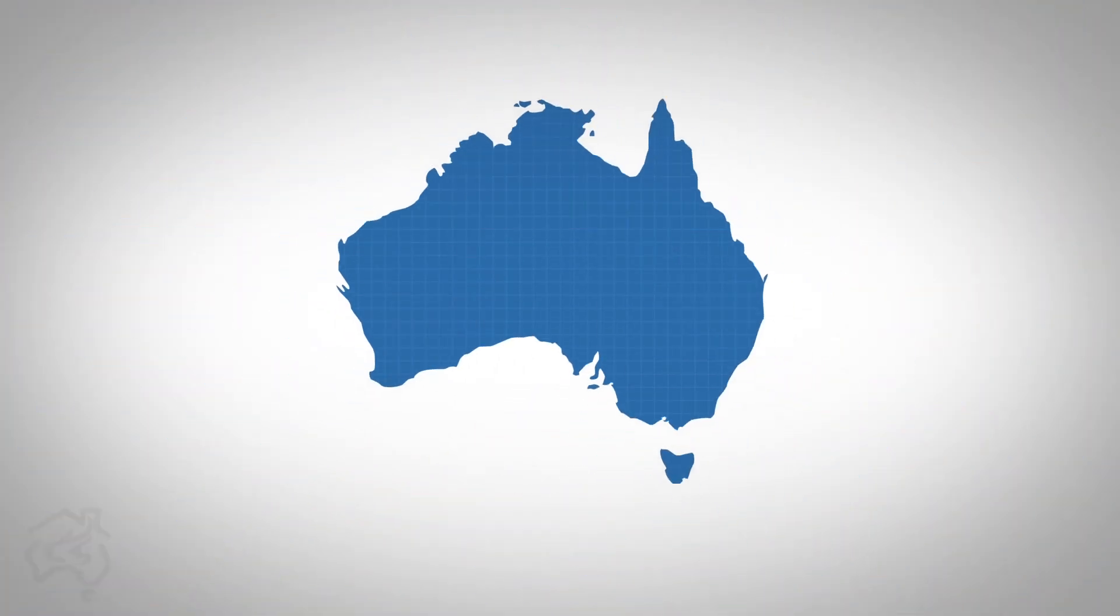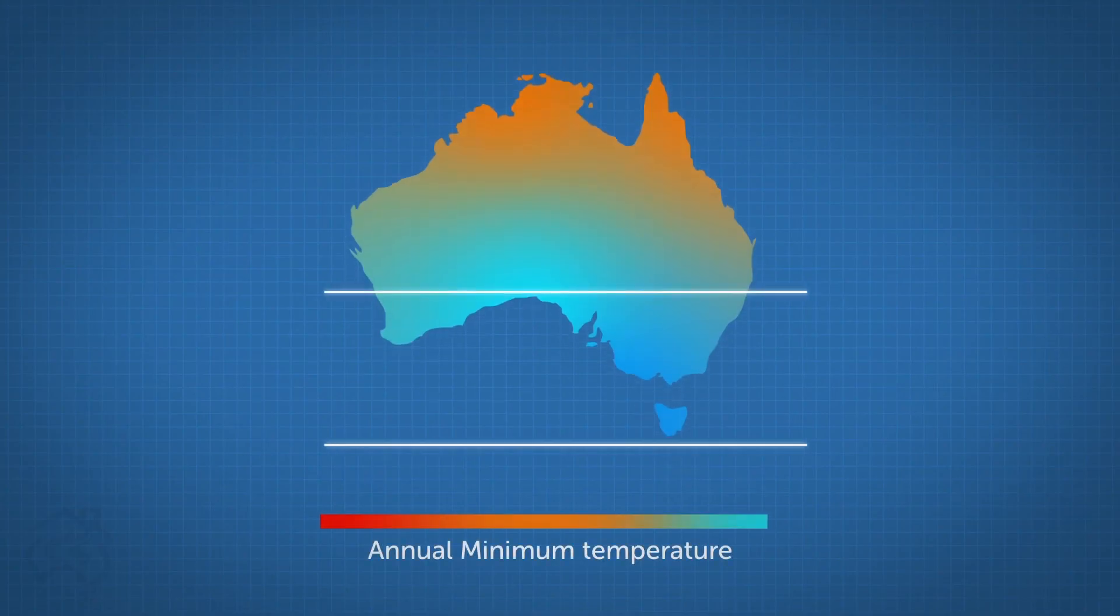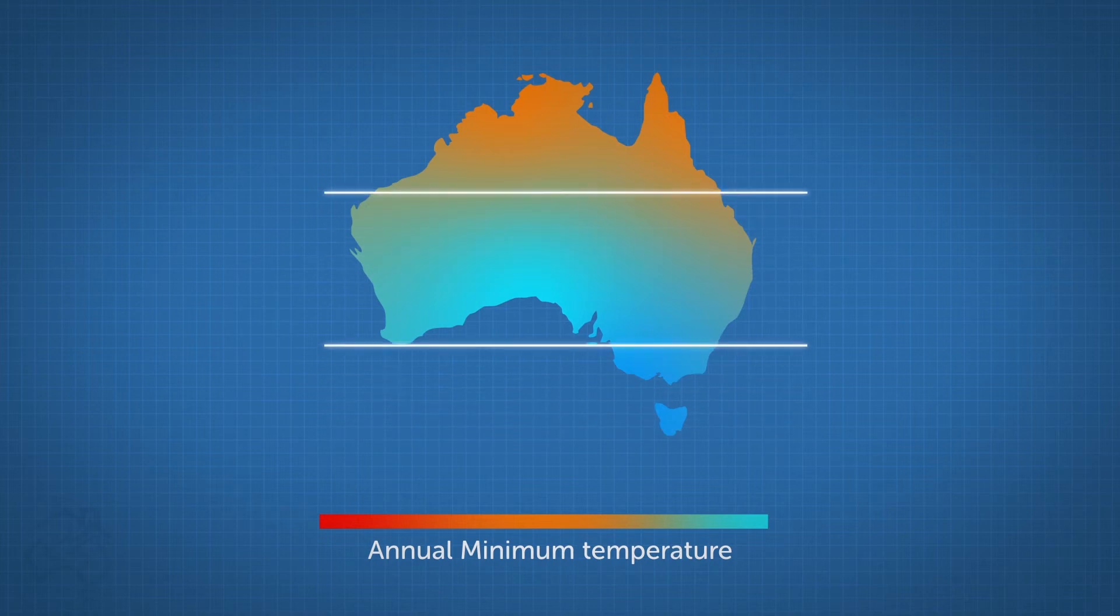The geographic location of your house is also important. Colder climate areas to the south of Australia will have a greater demand than warmer northern climates, placing greater demand on your unit.